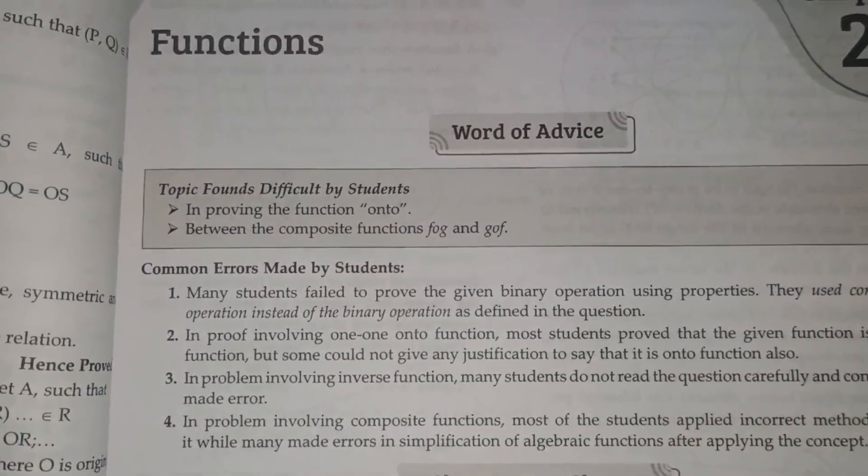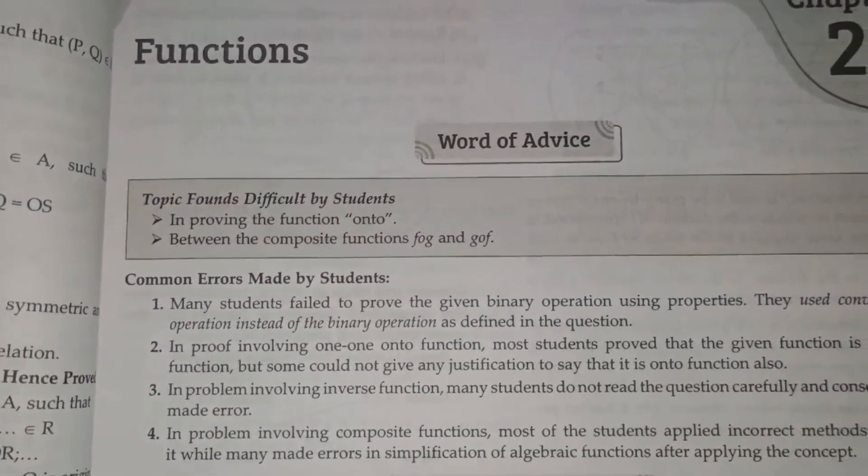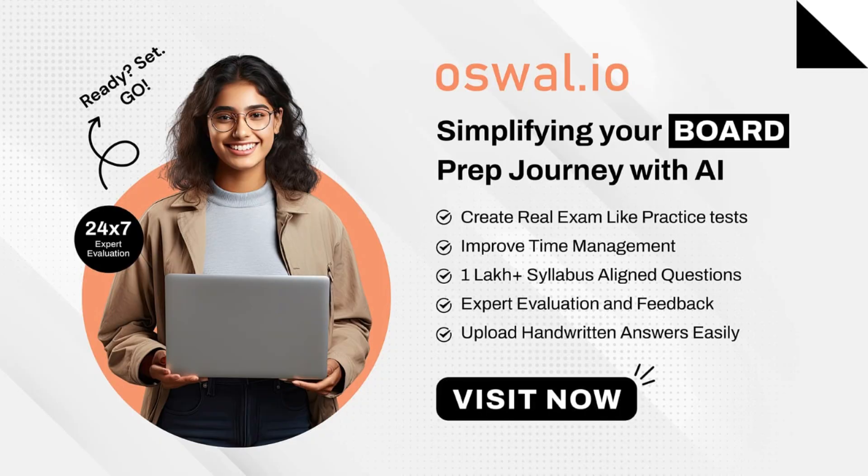And the link of all the books is in the description box, so check it out. And also you can check out their Oswald.io question bank. The Oswald.io is a website where you can, with the help of AI, you can do multiple things like make short notes, ask them to explain these things to you.